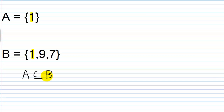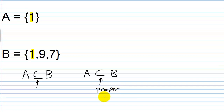Remember, this symbol is for a proper subset, and that's what we have in this case. If A is a subset of B and A is not equal to B — meaning A and B do not contain exactly the same elements — then it's a proper subset.